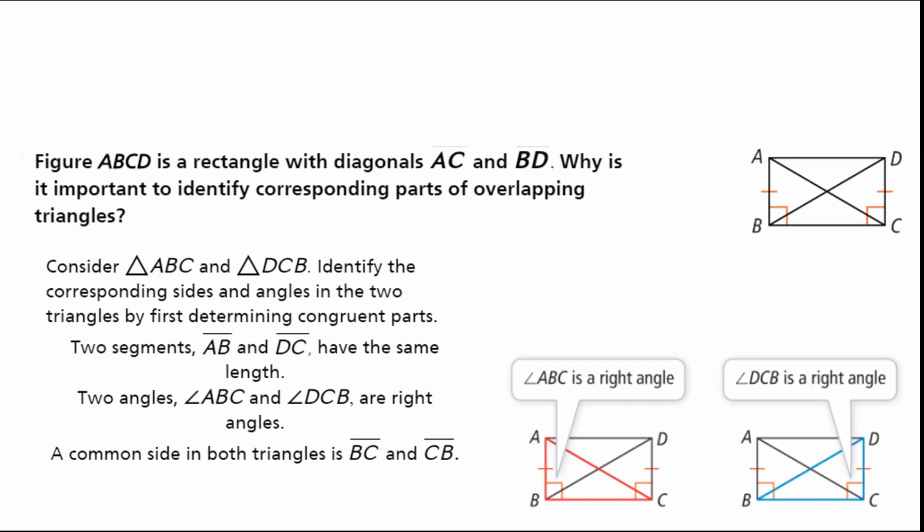Those five criteria were: side-side-side, side-angle-side, angle-side-angle, angle-angle-side, and hypotenuse-leg. We also learned that angle-angle-angle does not work for congruency but will come up again for similarity. And SSA — forwards or backwards, no bad words allowed — some criteria satisfy congruency, and some things come up that won't work for congruency but can help you plan your next move.